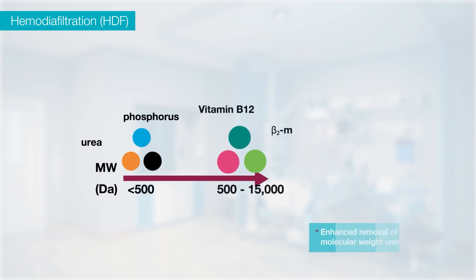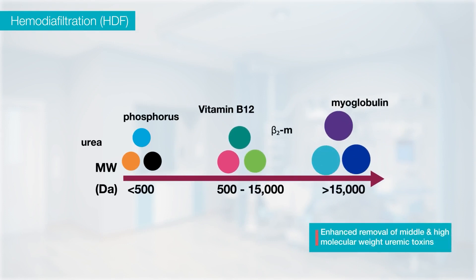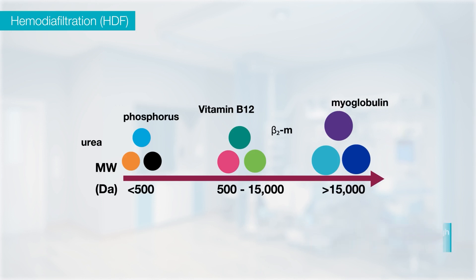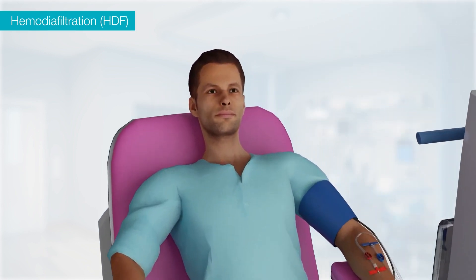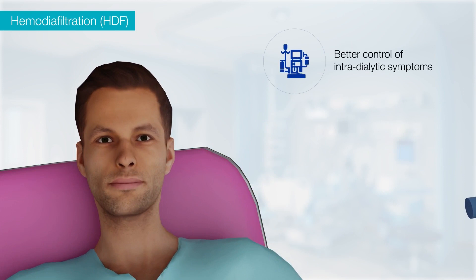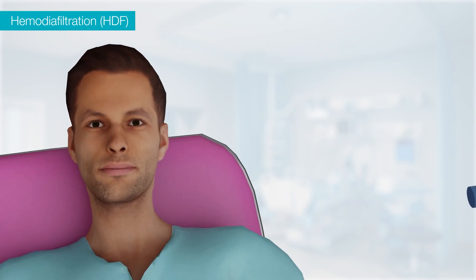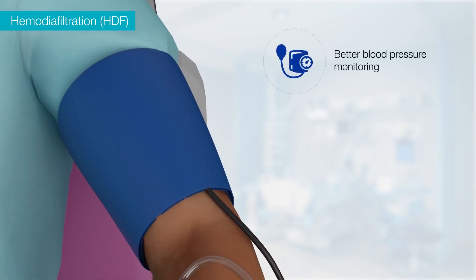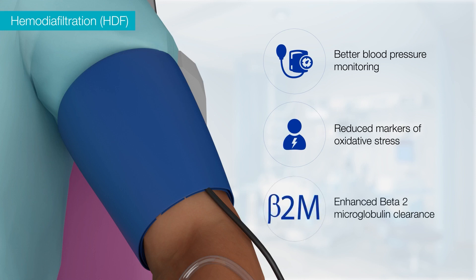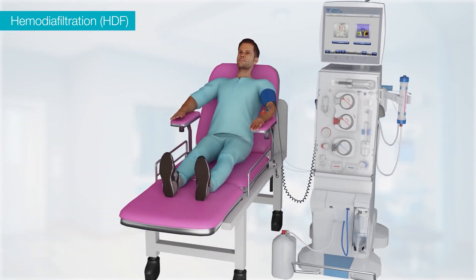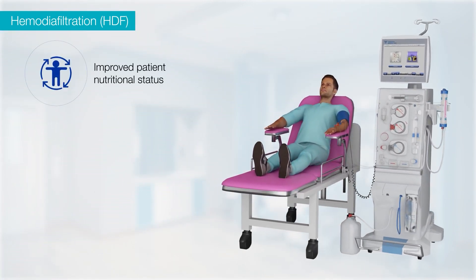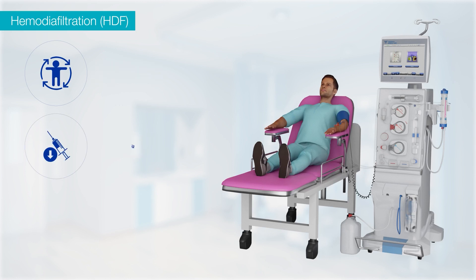Due to the enhanced removal of middle and high molecular weight uremic toxins along with small molecular weight toxins, online hemodiafiltration is a very effective renal replacement therapy. It shows improved quality of life through better control of intradialytic symptoms, anemia, phosphorus control, hypertension control, and reduction of cardiac symptoms. It also provides better blood pressure monitoring, reduced markers of oxidative stress, enhanced beta-2 microglobulin clearance, improved patient nutritional status due to better leptin clearance, and reduced EPO requirements due to relatively constant haemoglobin levels.